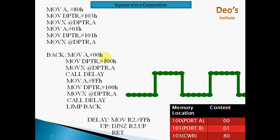So the pattern is: send 00H, call delay, then send FFH, call delay. Again 00H call delay, FFH call delay — like this, the square wave is formed continuously.